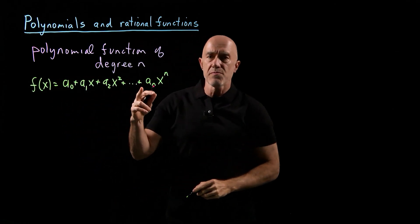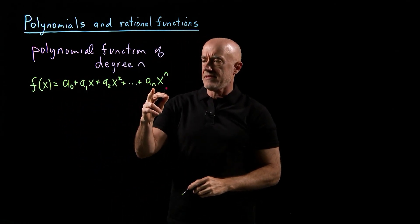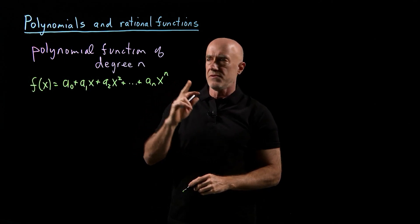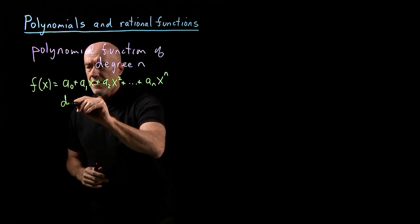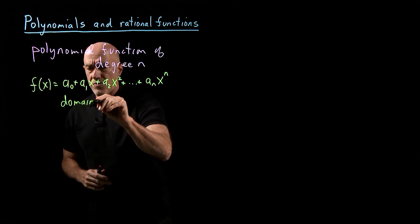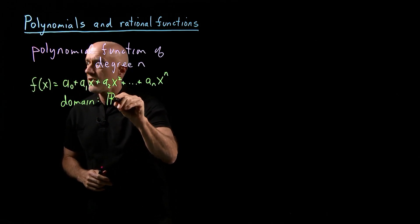And if the polynomial is of degree n, then this aₙ cannot be equal to 0. The domain of a polynomial function is always the entire real line, so it's R.